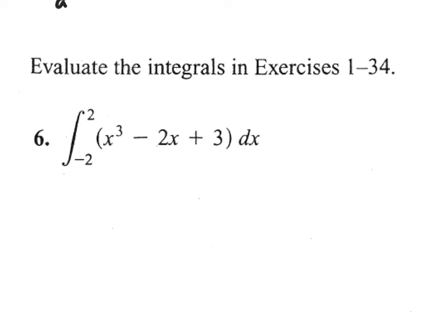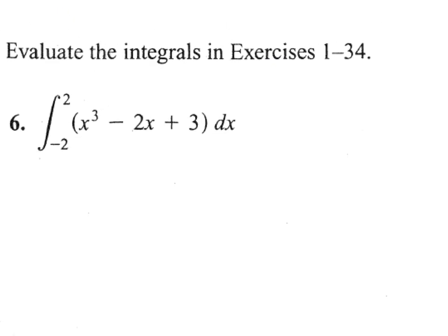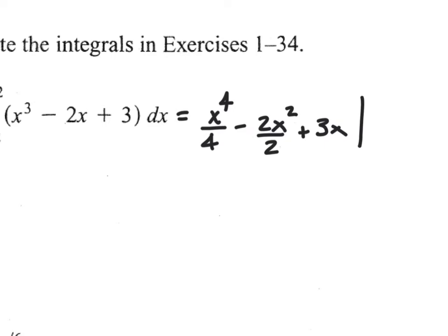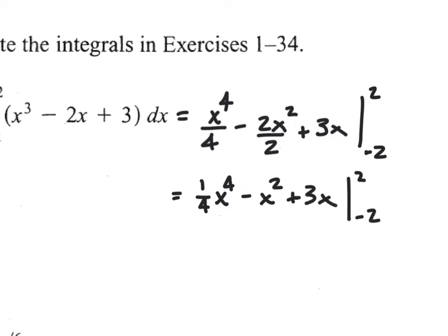We'll try this on number 6. The first thing I want to do is take the antiderivative, so I'm going to set this equal to x to the fourth divided by my new exponent, minus 2x squared divided by 2, plus 3x. Evaluating this at negative 2 and positive 2, I'll simplify to get one-fourth x to the fourth minus x squared plus 3x, evaluated at 2 and negative 2.